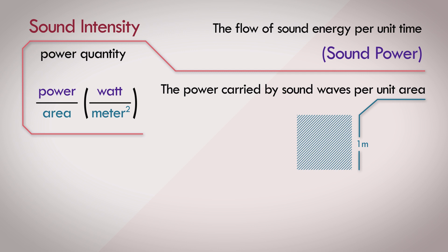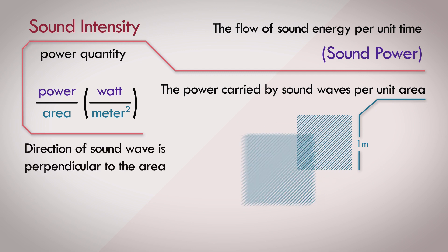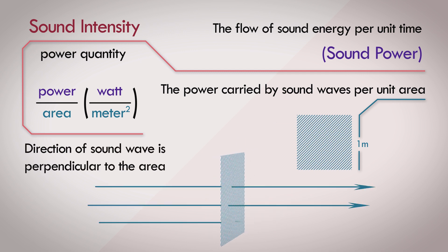And finally, the direction of this sound wave is perpendicular to the area. So sound intensity is a directional quantity, and it represents the direction of propagation of the sound wave. This is a unique attribute that differentiates intensity from pressure and power. The other two are non-directional, and don't give you any indication of where a particular source of sound is located.